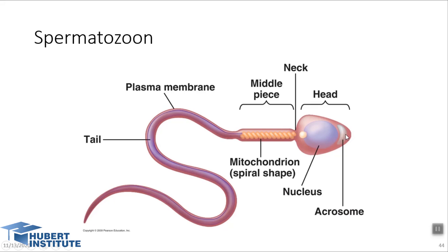Here you can see a mature sperm and its specific structure. In the head part, we have a condensed nucleus covered by the acrosome. The neck connects the head to the middle piece. The middle piece contains mitochondria, which produce ATP as an energy supply for sperm motility. The tail is a flagellum that helps the sperm reach the site of fertilization inside the female reproductive tract.